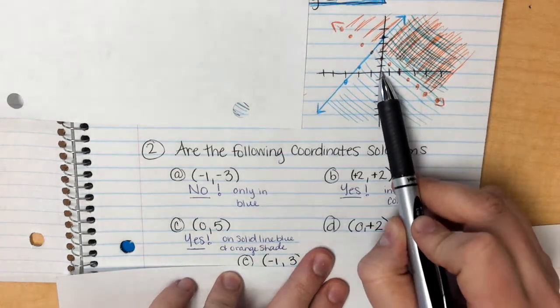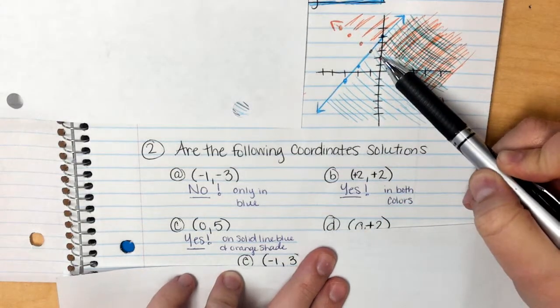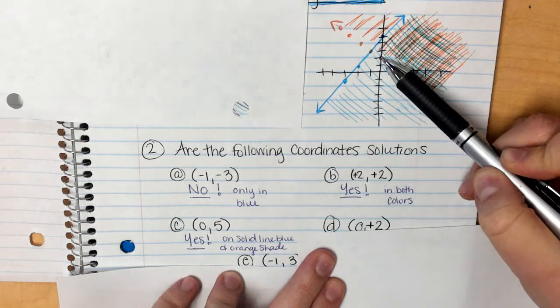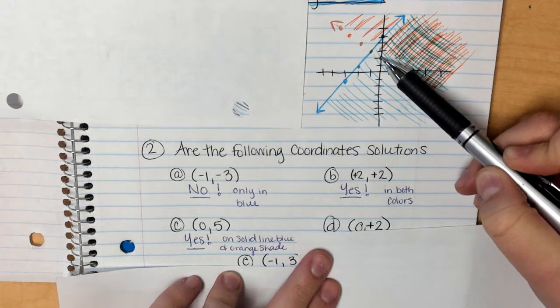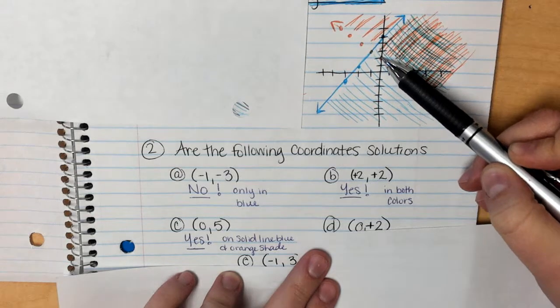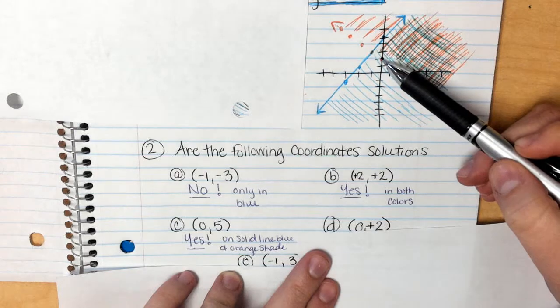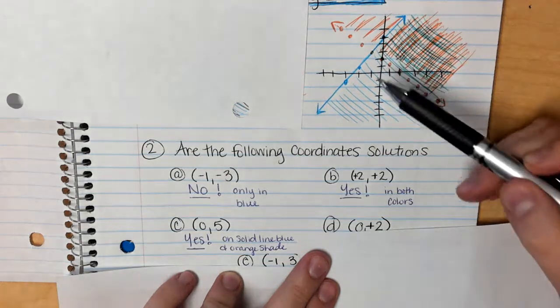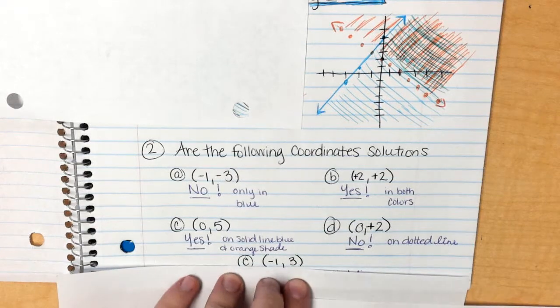The point 0,2. So I go 0, I go up 2. So right here I'm on the orange's dotted line. But let's ask myself the questions. Are we in the blue area? Well he's in the shaded down blue area, so yes. But is he in the orange? The answer to that is no, because remember, our solutions cannot be on dotted lines. So because of that, he is not.